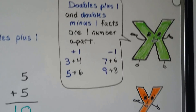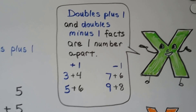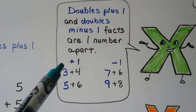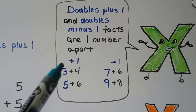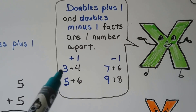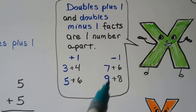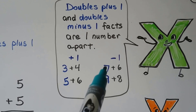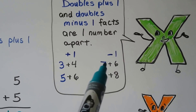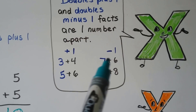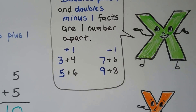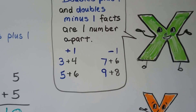Doubles plus one and doubles minus one facts have addends that are one number apart. For the plus one, we have a three then a four, a five then a six — see how they're one number apart from each other? For the doubles minus one, they're one number apart but it goes one less: seven and then six, like counting backwards — nine and then eight, one smaller.